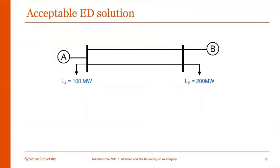We'll look at an example of an economic dispatch solution. This is a small two-bus system with two generators A and B. Let's assume load at bus A is 100 and load at bus B is 200 megawatts. We also assume bus A is a relatively cheap generating bus, whereas bus B has a more expensive generating unit.